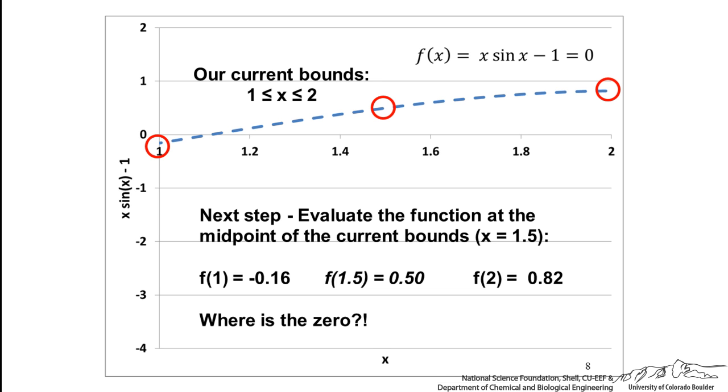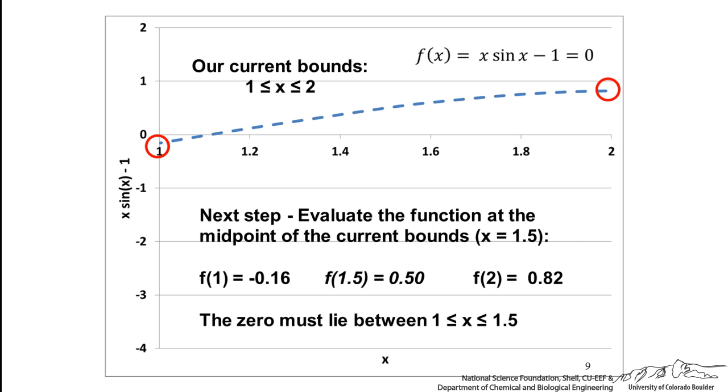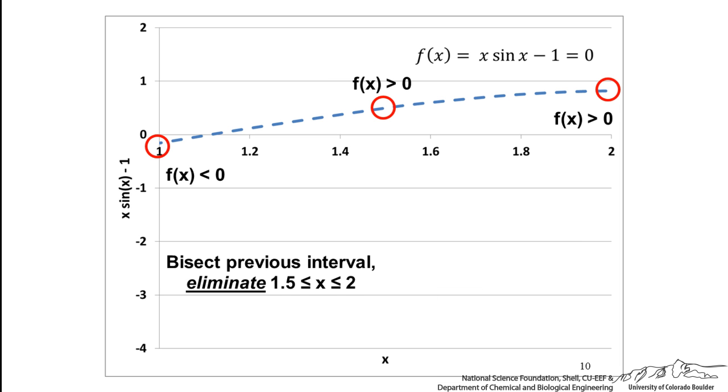We see that it has a positive sign, so where must the zero be? It has got to be somewhere between 1 and 1.5 because that is where we see the sign change. Because of this, we can eliminate the 1.5 to 2 and we can eliminate half of our choices.